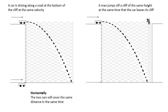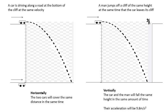Whatever's happening horizontally doesn't matter. Vertically, they will have the same acceleration. Okay, vertically, the car and the man will fall the same height in the same amount of time. Their acceleration will be 9.8 meters per second squared.